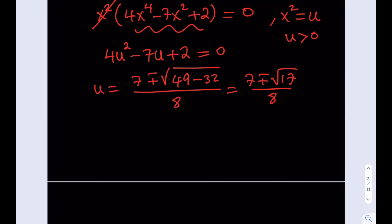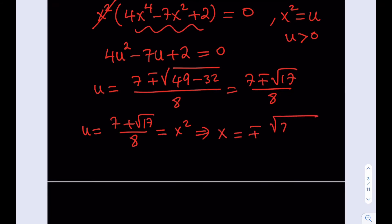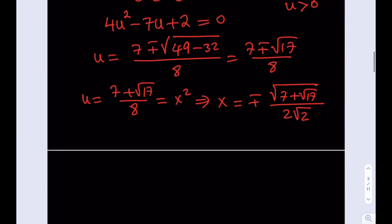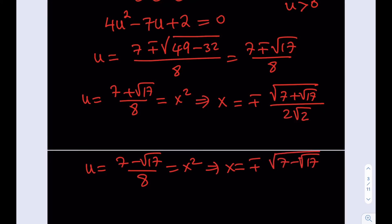Since u = x², taking square roots gives four solutions for x: x = ±√((7 + √17)/8) and x = ±√((7 − √17)/8). This gives four solutions total, which is expected from a biquadratic (degree-4) equation.